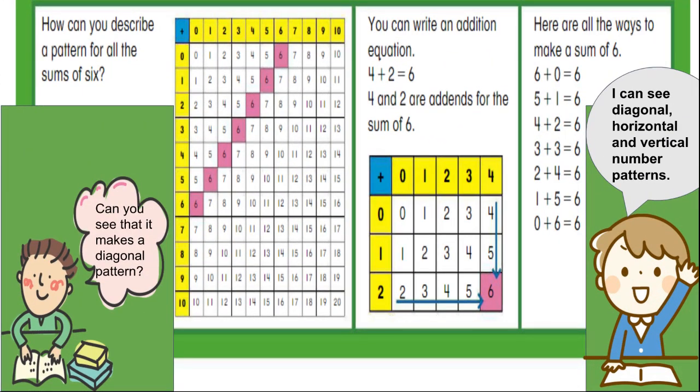Let's look at this question. How can you describe a pattern for all the sums of 6? Now, let's start with 6. 6 moves 0 places, so 6 plus 0 is 6. Now, let's go to 5. 5 moves over 1 place, so 5 plus 1 is 6. Now, let's go to 4. 4 moves over 2 places, so 4 plus 2 is 6.